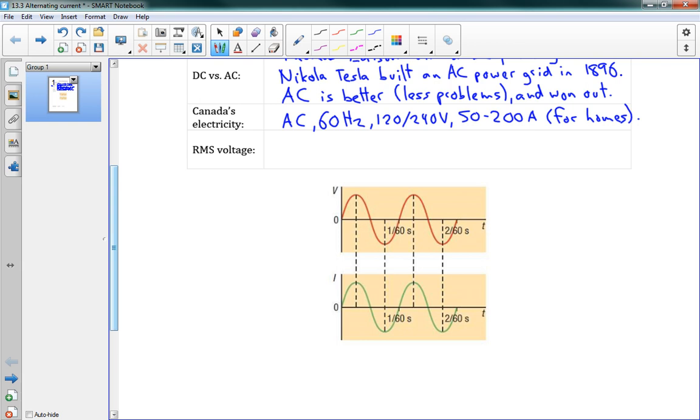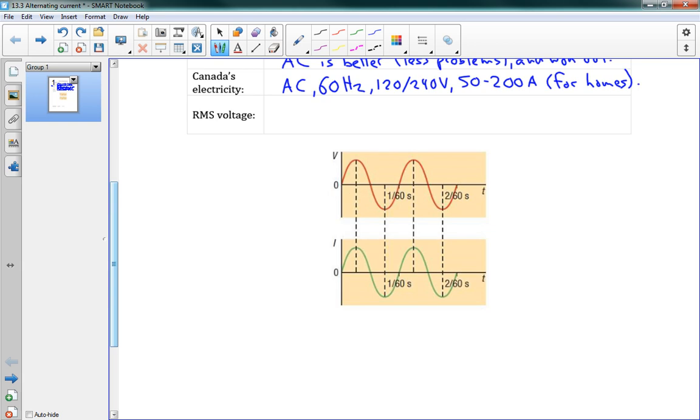Now, the last thing here is that we said 120 and 240 volts. But there's a bit of a question there, because if our current is constantly changing, and we've got current down here, voltage and current are related. So if the current is constantly changing, then the voltage has to be constantly changing too. So then where do we say is 120 volts? Is this 120 volts?